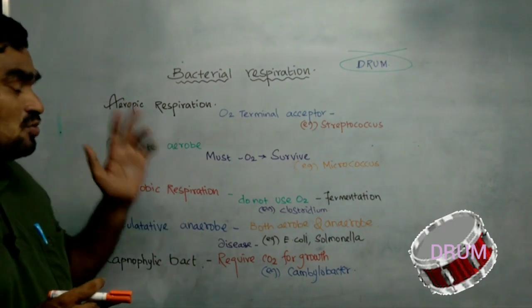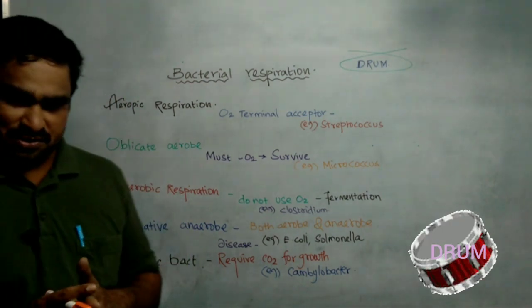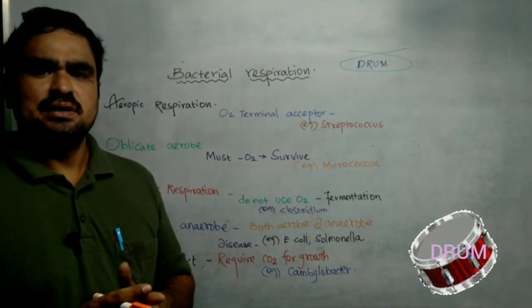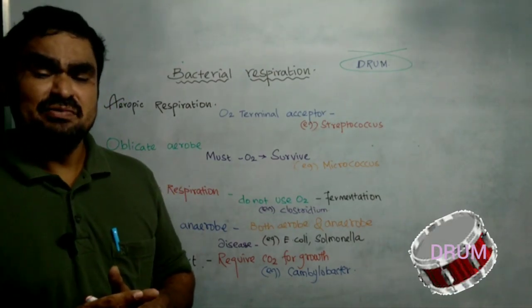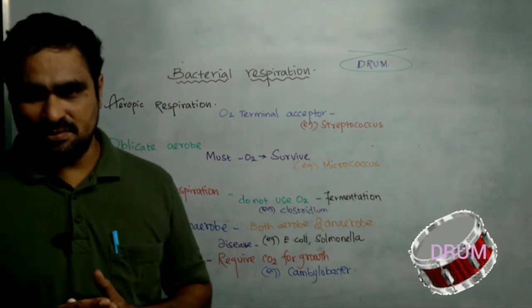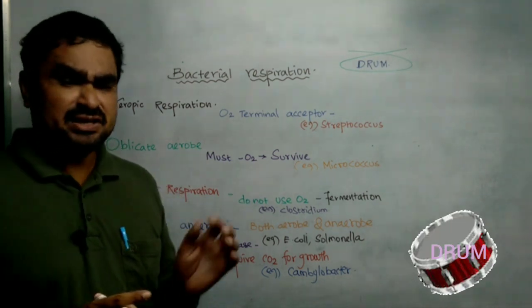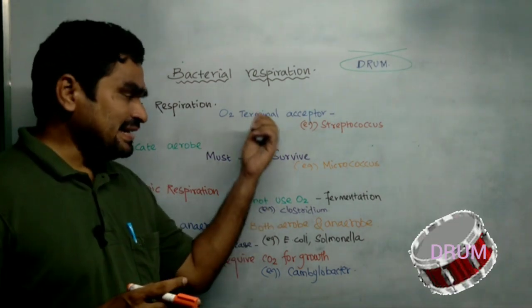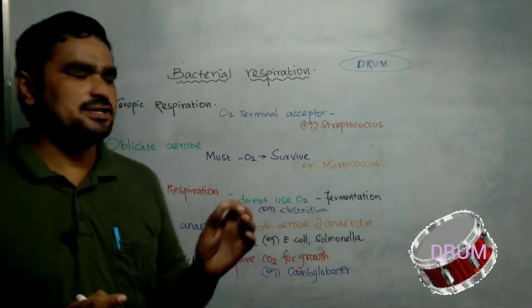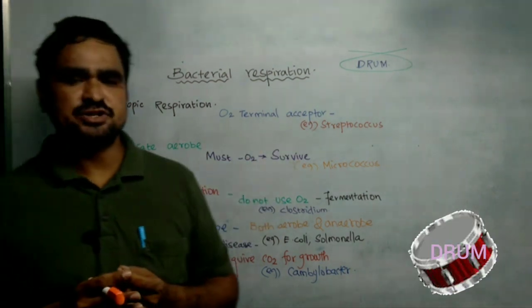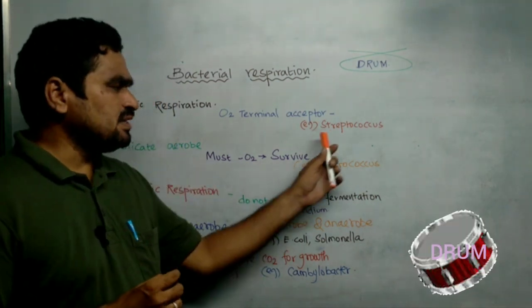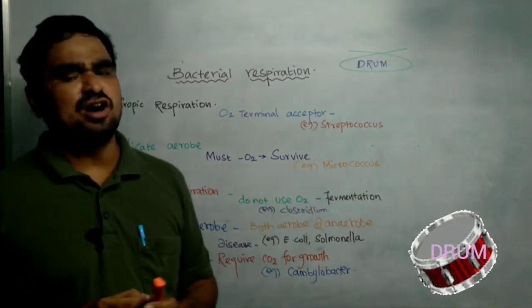The first type is aerobic respiration. In this respiration, the process takes place with the help of oxygen. Oxygen is the terminal acceptor of electrons in this type of respiration, and so it is called aerobic respiration. An example of aerobic respiration is Streptococcus.